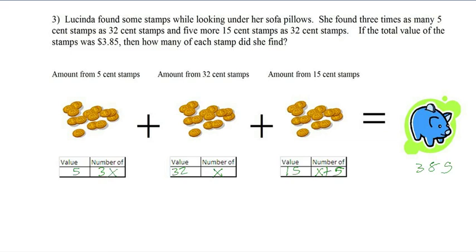And this is what you should have gotten. So we have three times as many of the 5 cent as 32, and five more of the 15 cent stamps than the 32. So everything was in terms of 32. So that was where the x goes. All right. Now you can just solve it.